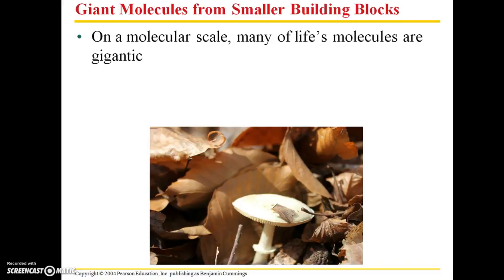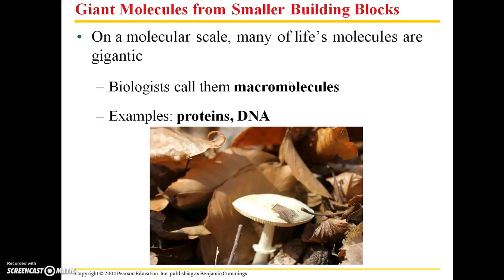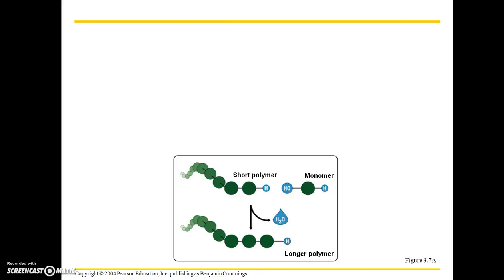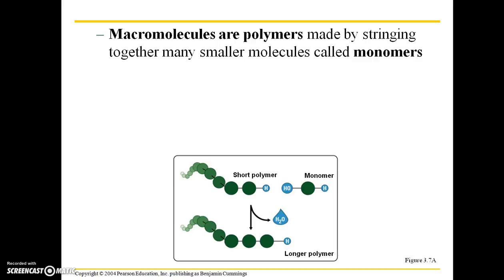On a molecular scale, many of life's molecules are gigantic. Biologists call these macromolecules — macro meaning big molecules. Some examples of macromolecules are proteins and DNA. Macromolecules are polymers, which are made by stringing together many smaller molecules called monomers. Mono means one, poly means many. When you take many monomers and attach them, they make up polymers, as shown here.